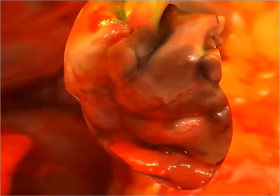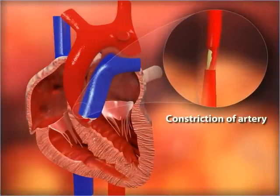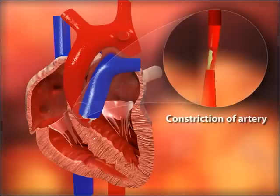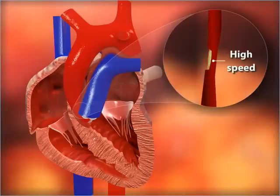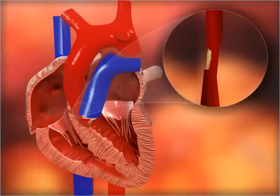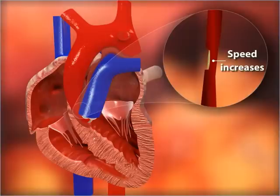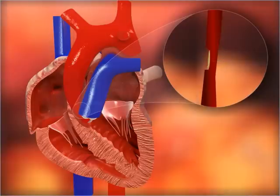Bernoulli's Principle also explains the reason for heart attacks. The artery gets constricted due to the accumulation of plaque on its inner walls. Blood flows through this constriction with high speed, lowering the pressure inside. The artery may collapse due to external pressure. The heart then exerts further pressure on the blocked artery, forcing blood through it. As blood rushes through the opening with increased speed, the internal pressure once again drops, leading to a repeat collapse.